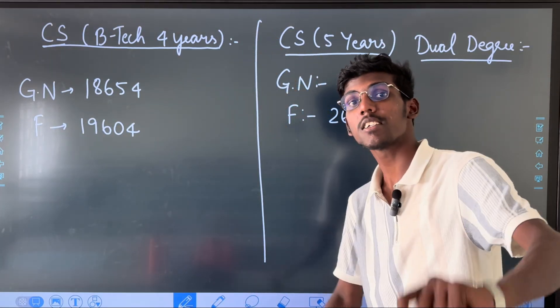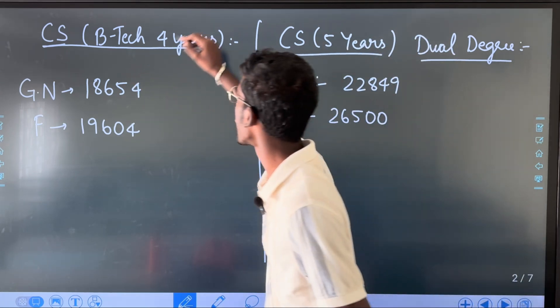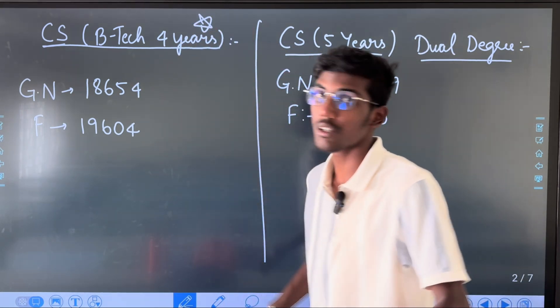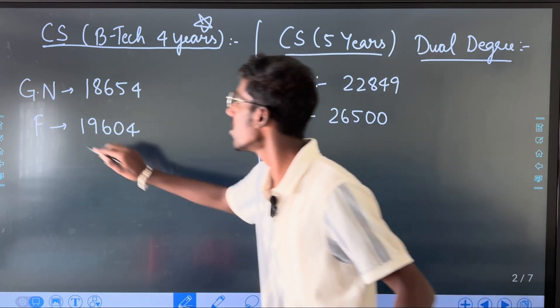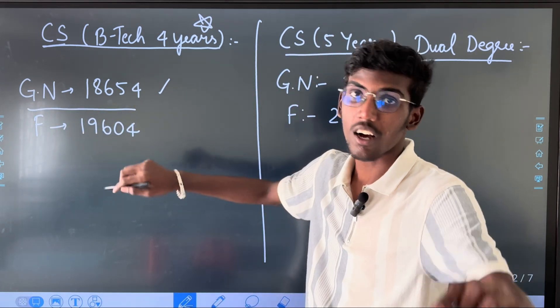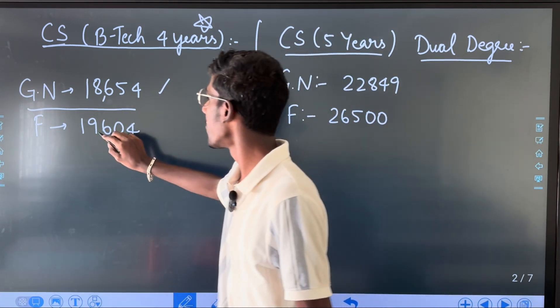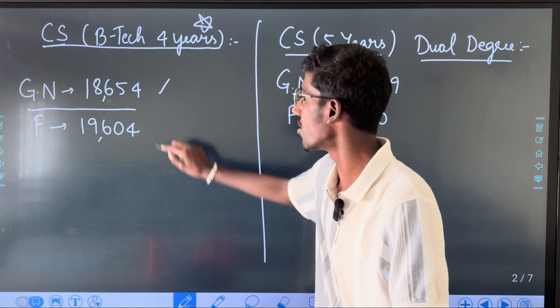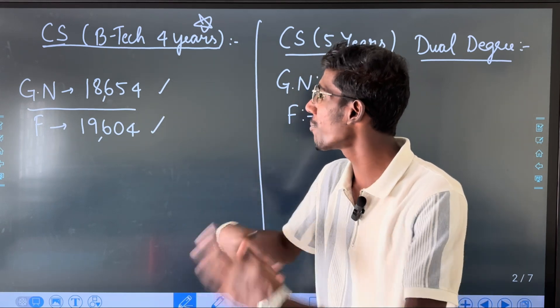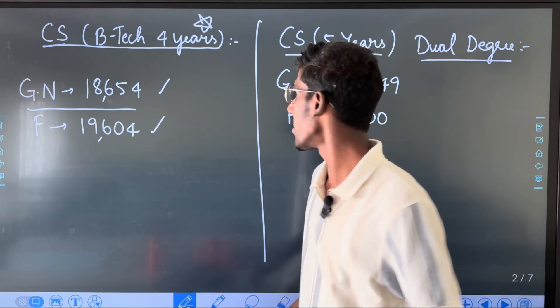Here you can see CS in three types of courses. CS B.Tech 4 years - for this course, the general neutral ranking closing rank in the last round is 18,654, and the female category is 19,604. If you look at the rank difference, there is a rank difference.